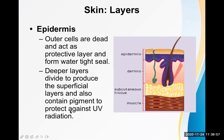The stratum corneum has a protective function, forming a tight water seal on the outer surface. The deeper epidermal layers are living cells that multiply and move upward; all keratinocytes originate from the stratum basale. Melanocytes in the epidermis produce melanin, which prevents ultraviolet rays from reaching cell nuclei, protecting them from UV damage.